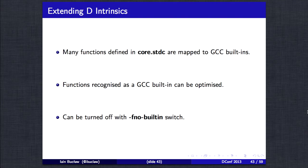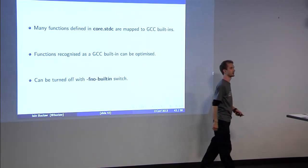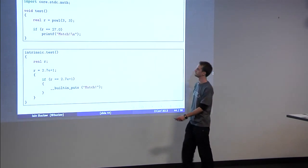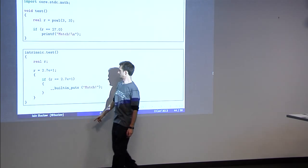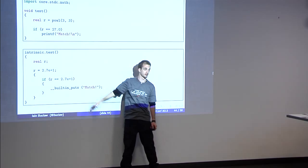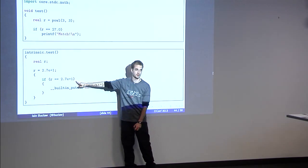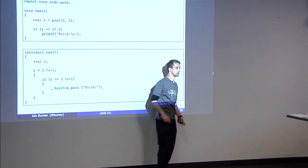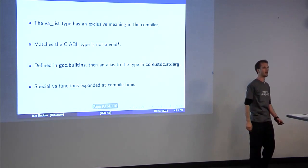So, rndtol converted to builtin llround L. And the bitscan is, again, sort of checks that and sets. As well as that, one cool thing that we do is extend upon this and actually map any extern C function that doesn't have a body that's located in core.stdc to GCC builtins. This has the advantage of the fact that anything within this module is actually recognized as a builtin. Of course, it can be turned off using fno-builtin switch.